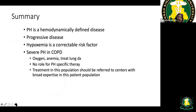In summary for group three PH: it is a hemodynamically defined disease; hypoxia is a correctable risk factor; oxygen is critical. For severe PH, treat with oxygen; if anemic, treat anemia to increase oxygen-carrying capacity; treat underlying lung disease with inhalers and bronchodilators for obstruction. There is currently no established role for PH-specific therapy in group three patients.